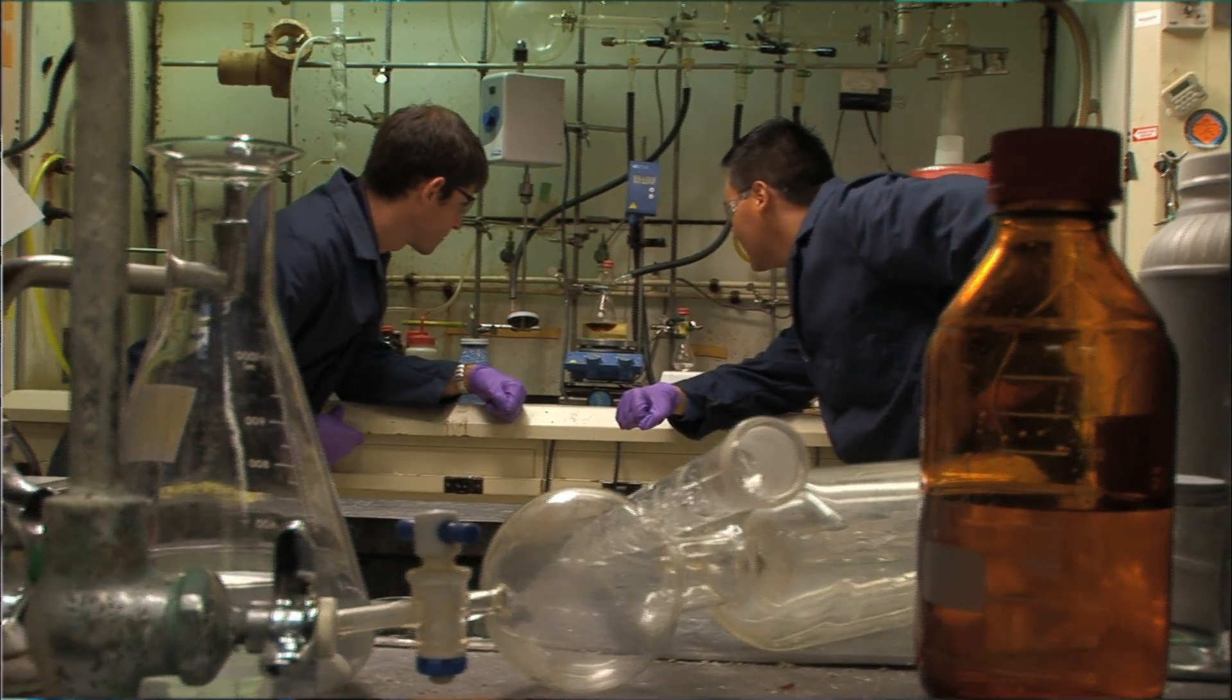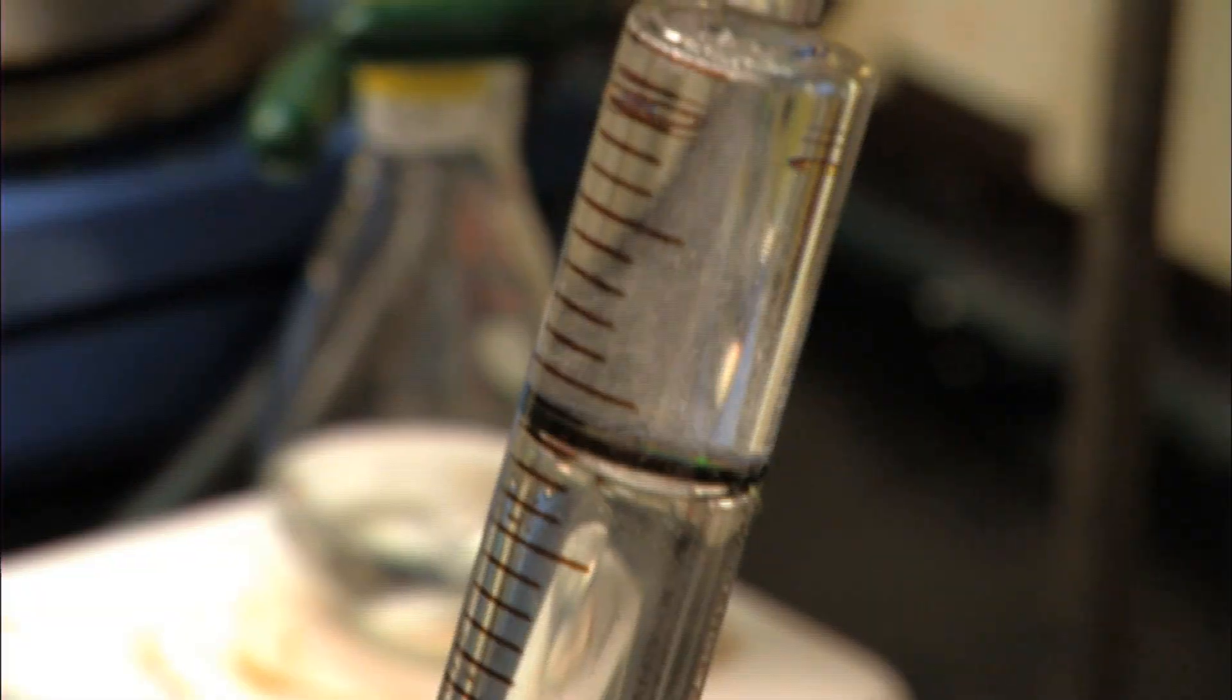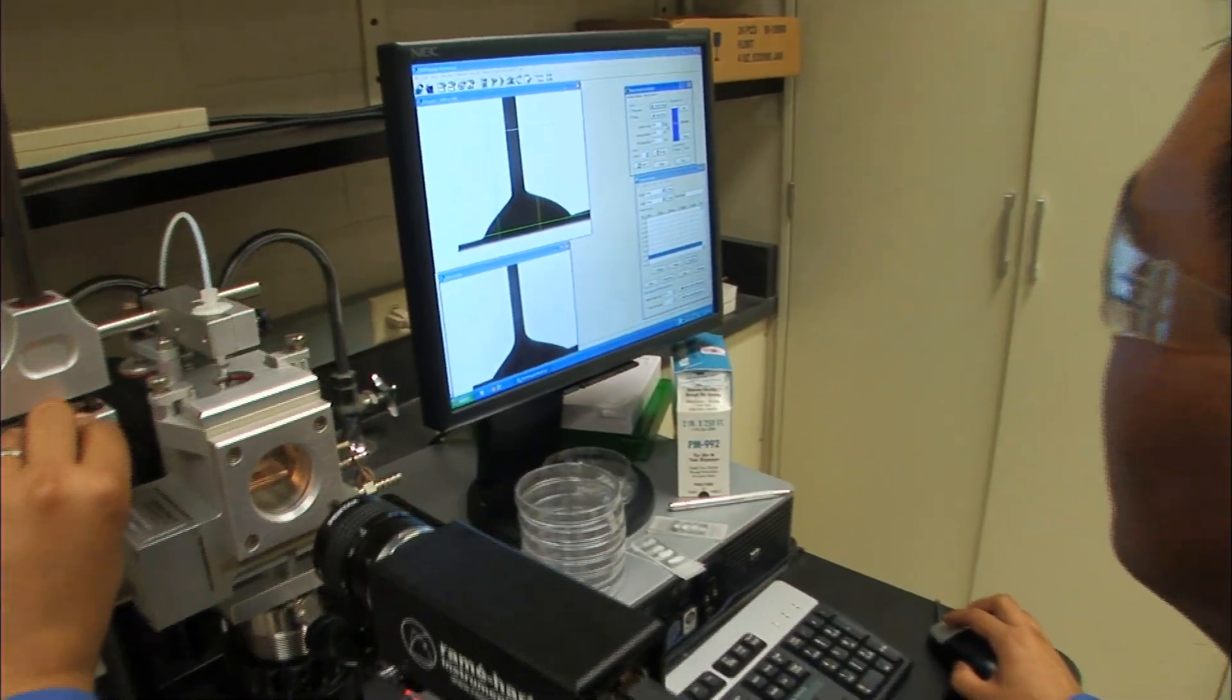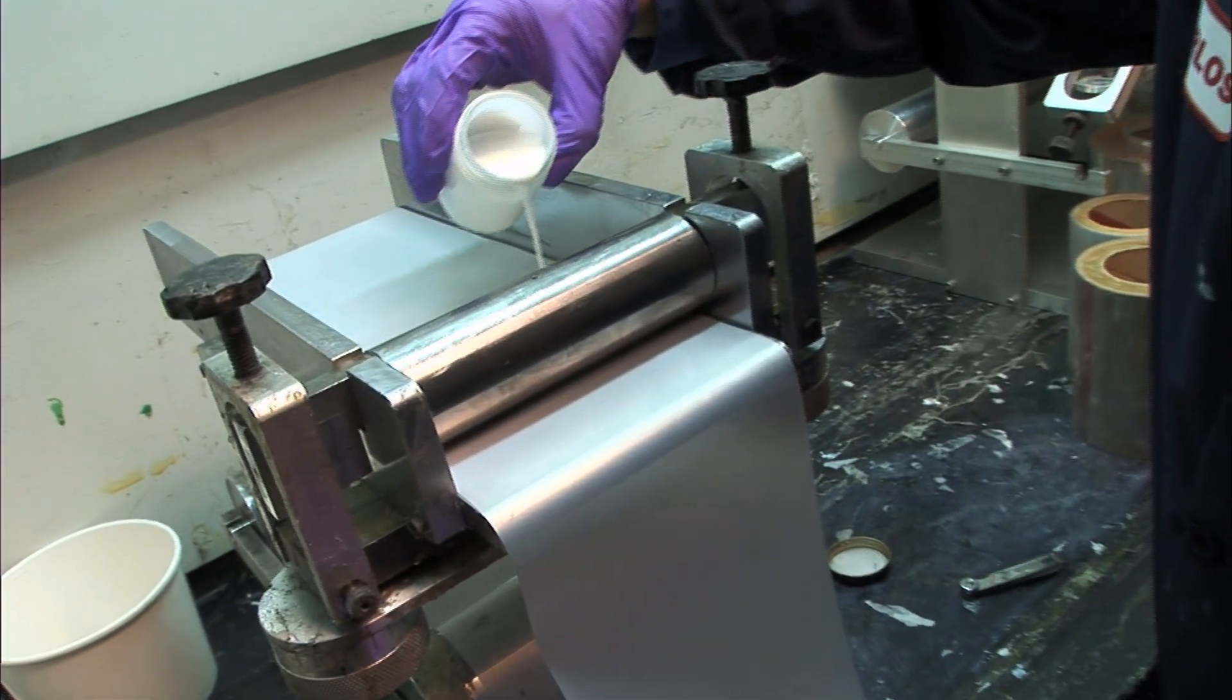During the development process, products go through several stages before full-scale production can begin. Most of the time we start on the bench, we make the material, we characterize it, and we start making very small hand spreads.